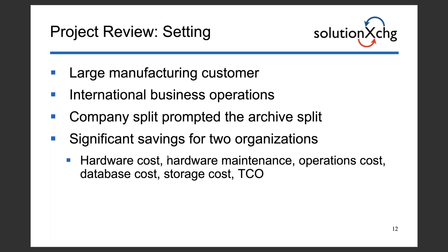Let's look at a large manufacturing customer example. An international business operation — a company split — prompted an archive split. They opted to gain significant savings for both organizations: reduced hardware costs, reduced hardware maintenance, reduced operating costs, no more database costs, reduced storage costs, and overall total cost of ownership significantly down.